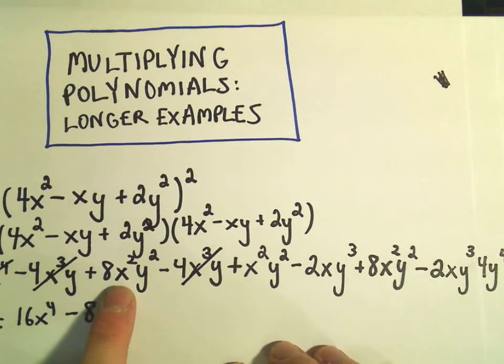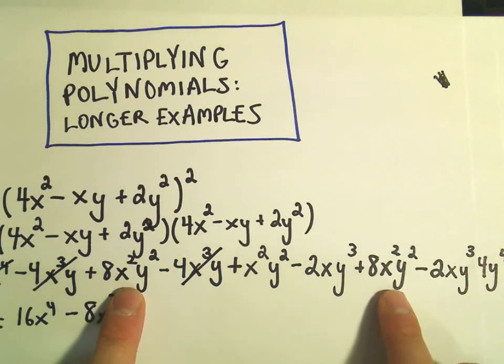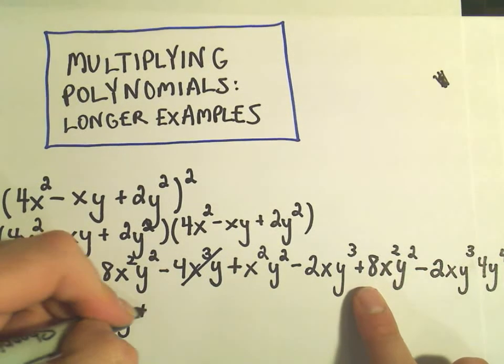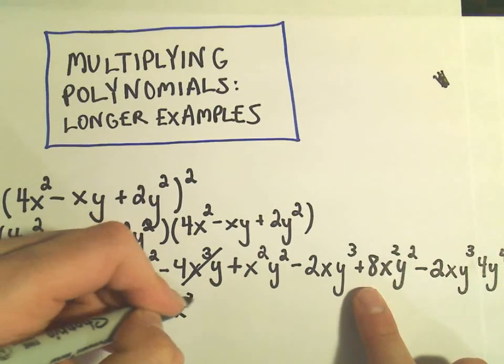And then let's see. It looks like we have some x²y². And I have another x²y² over here. It looks like we've got 8 and 8 of them. So that'll give us positive 16x²y².